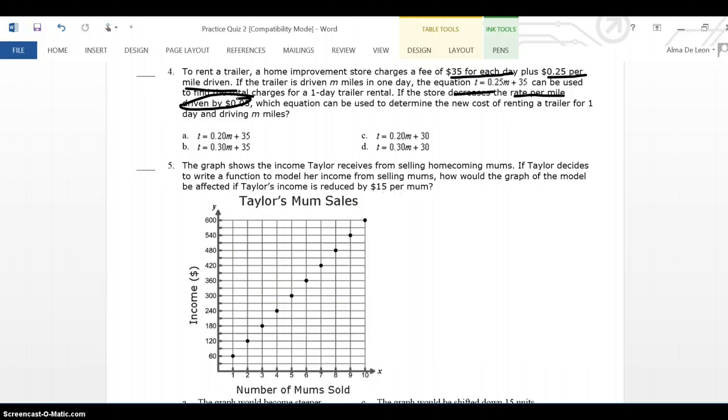Okay, so right now, the store is charging $0.25 per mile driven, but I want to decrease that by $0.05. $0.25 minus $0.05 is $0.20, so I know that my new slope is no longer going to be $0.25. My new slope has to be $0.20.